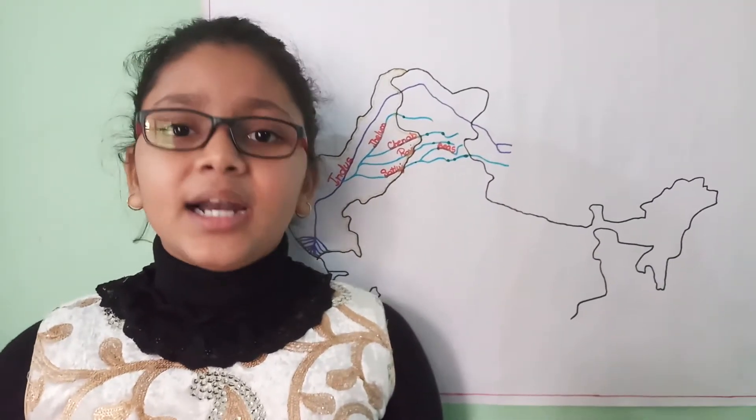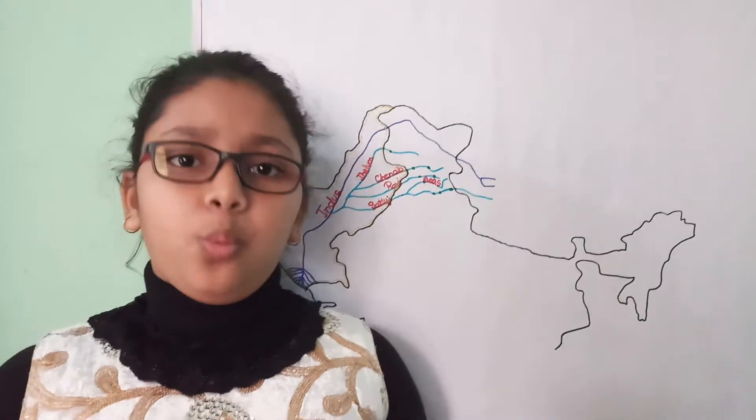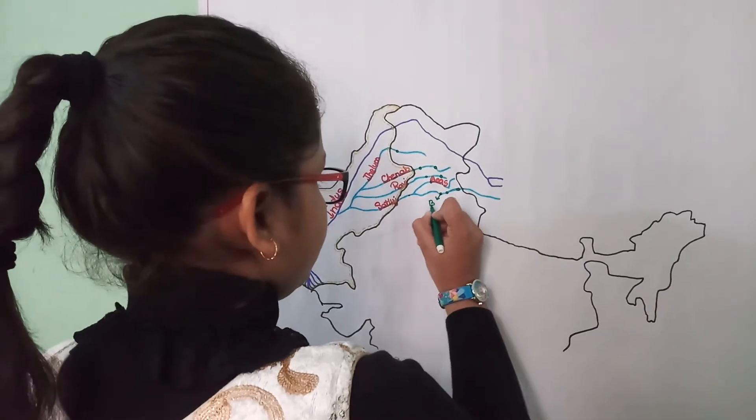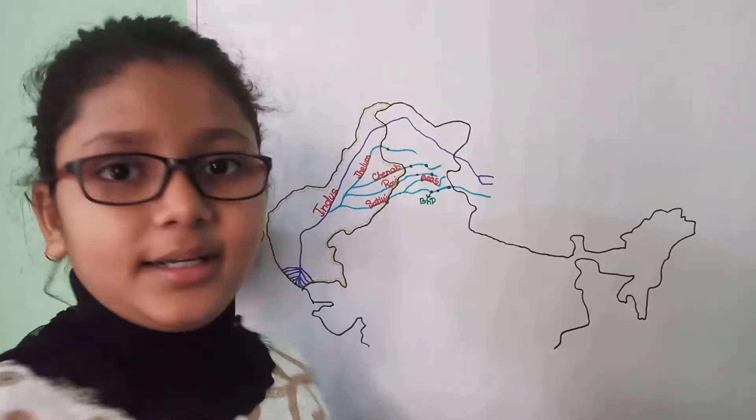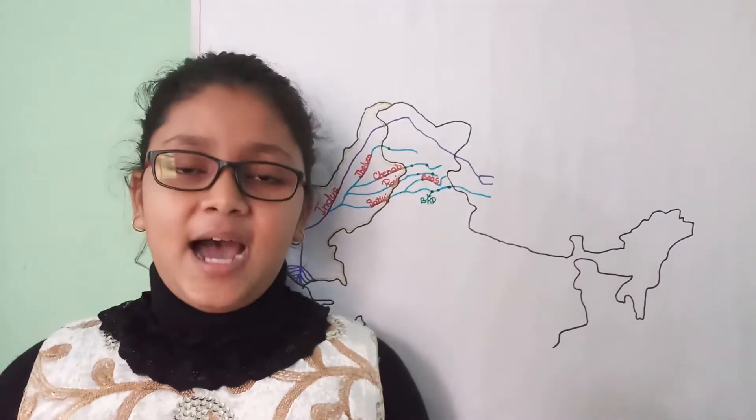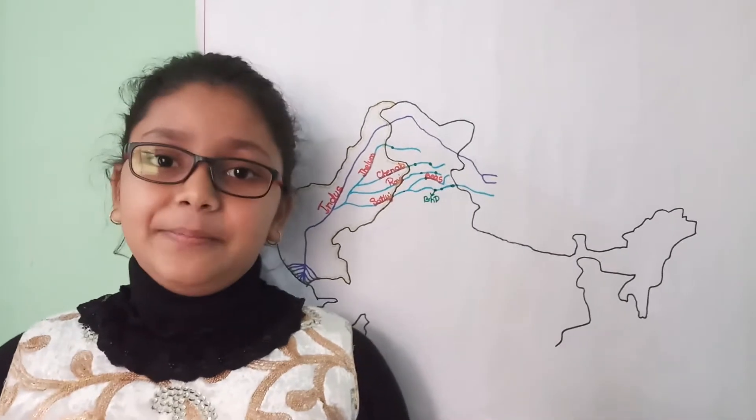So we will start from the Satluj River. The first project is the Bhakra Nangal Dam. It is built on the Satluj River in Bilaspur, Himachal Pradesh. And it is one of the most important dams in India. So it is here, Bhakra Nangal Dam project.